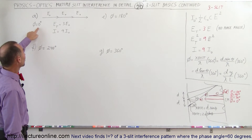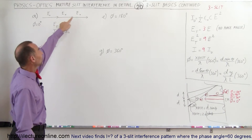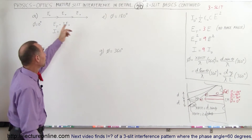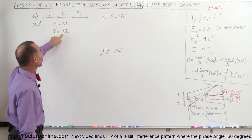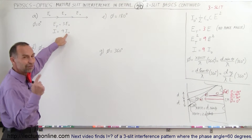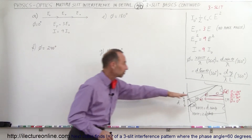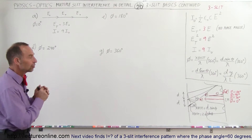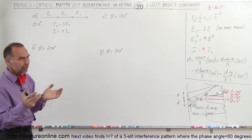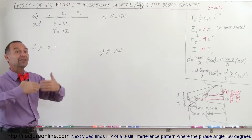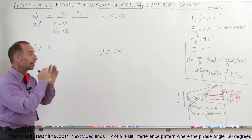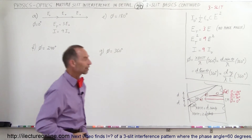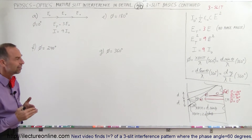Just to reiterate, when it was zero degrees we could see that the phases lined up perfectly. The total electric field strength was simply equal to three times E. Therefore the intensity, which is this number squared times the original intensity of a single wave, gives us nine times the intensity at the central maximum compared to a single slit.